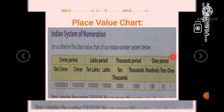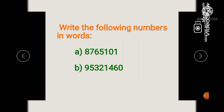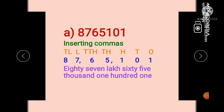This is the place value chart in the Indian system of numeration. Let us look at an example — write the following number in words. To write the number name, let us arrange the digits in the place value chart.